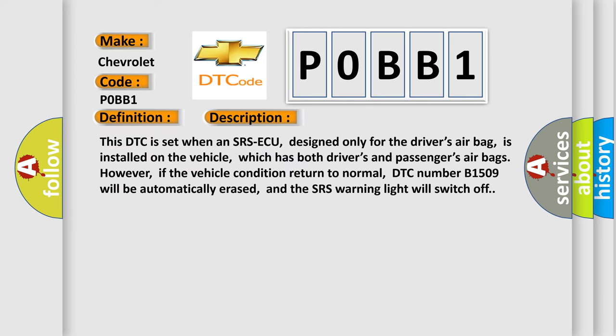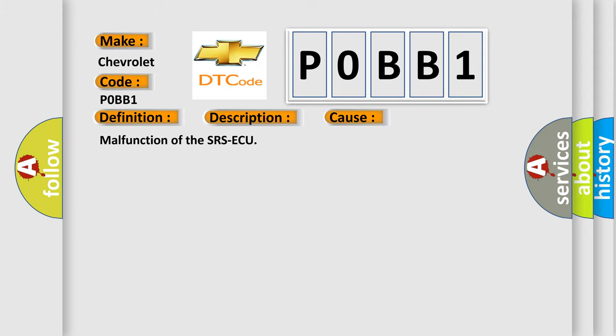This DTC is set when an SRSAQ, designed only for the driver's airbag, is installed on a vehicle which has both driver's and passenger's airbags. However, if the vehicle condition returns to normal, DTC number B1509 will be automatically erased and the SRS warning light will switch off. This diagnostic error occurs most often in cases of malfunction of the SRSAQ.